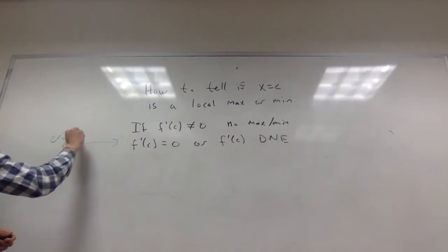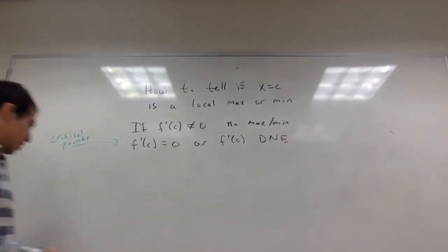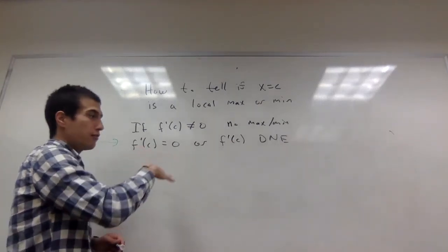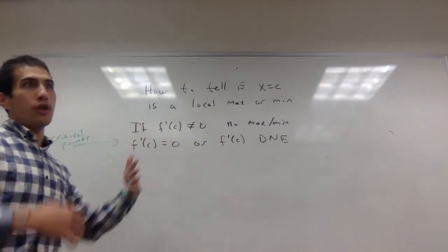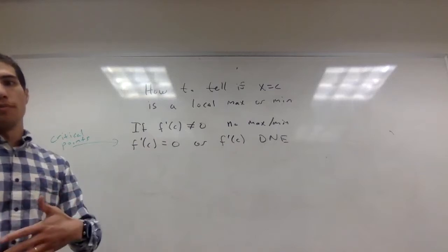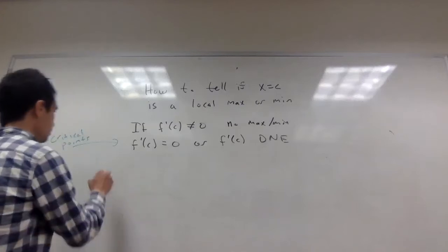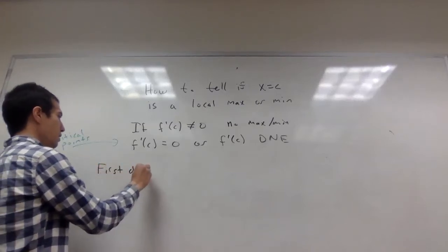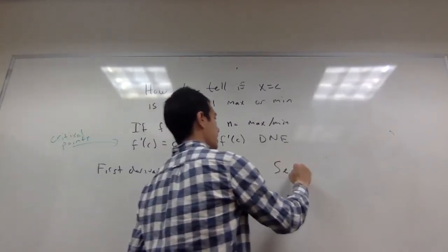By the last video we can assume that we're at a critical point — either the function has a zero derivative at this point or the derivative doesn't exist. Now I want to know: is the point a local max, a local min, or is it neither? There are two ways to do this. The first one is called the first derivative test, and the second one is called the second derivative test.